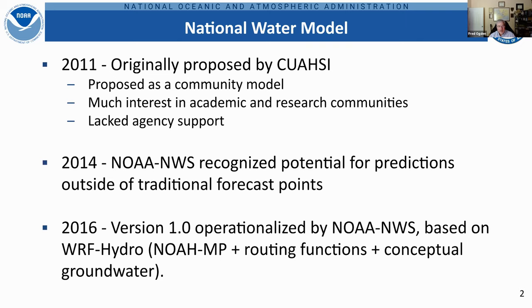In 2014, the National Weather Service recognized the potential for making predictions outside of our traditional river forecast center forecast points and decided that a nationwide continental-scale modeling system was needed. In 2016, version 1.0 of the National Water Model was operationalized by NOAA National Weather Service, based on WRF-Hydro, which uses NoahMP for land surface column physics running on one grid, with routing functions operating on another grid and a conceptual groundwater component.